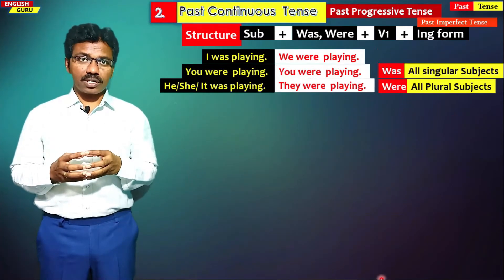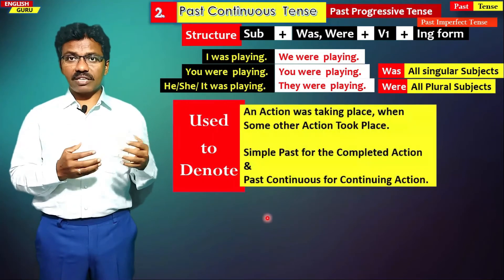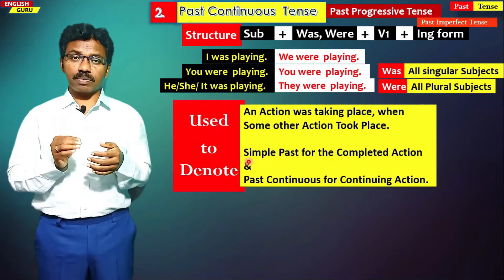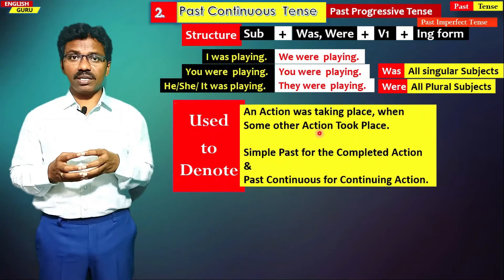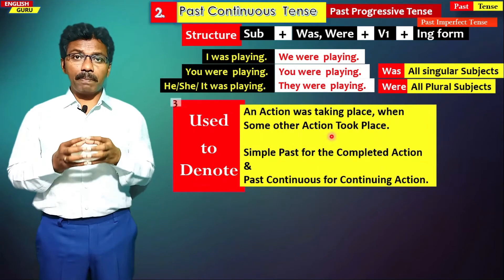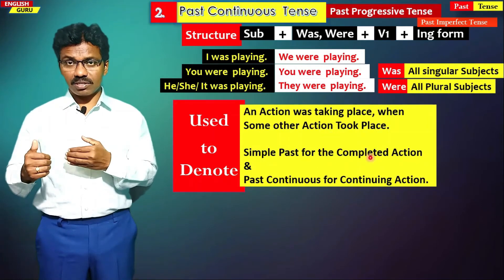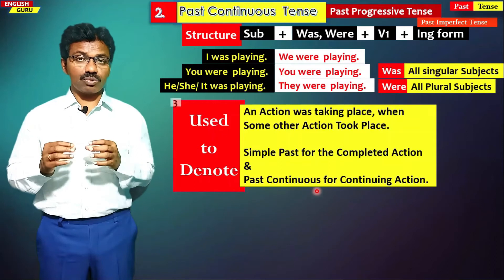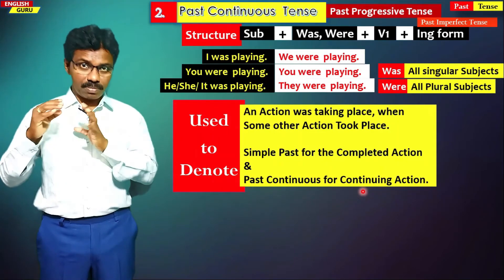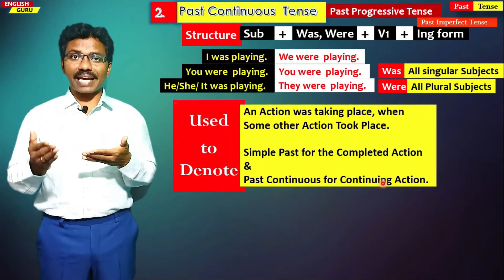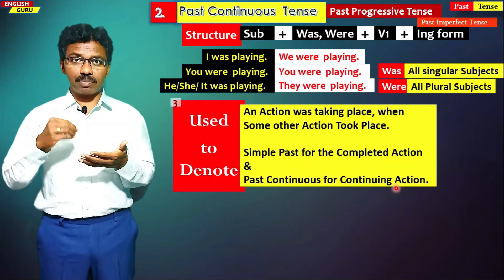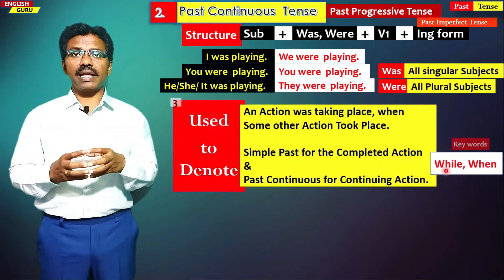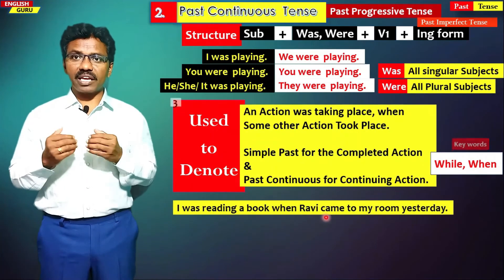There is one more usage of past continuous tense: when there are two actions that happened in the past — one action was taking place when some other action comes in between. Simple past tense is used for completed actions and past continuous tense is used for ongoing or continuing actions. That is very important. The two keywords here are while and when.